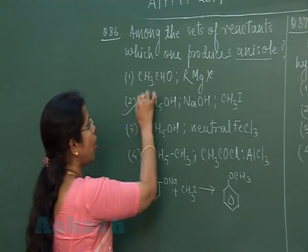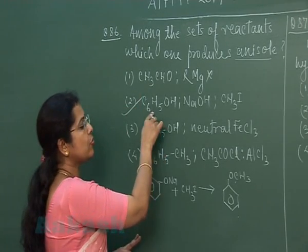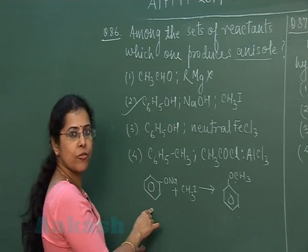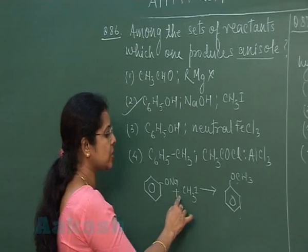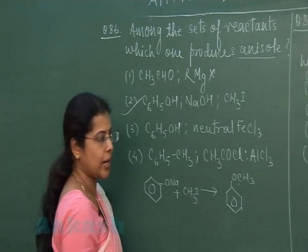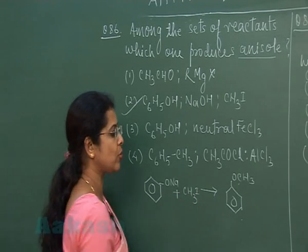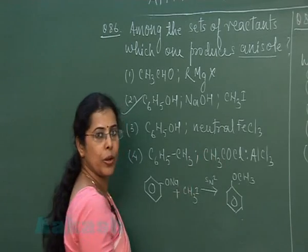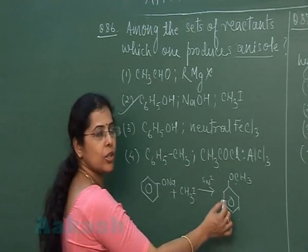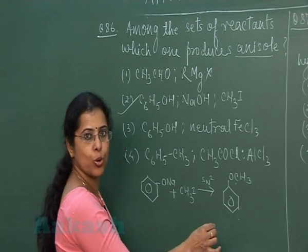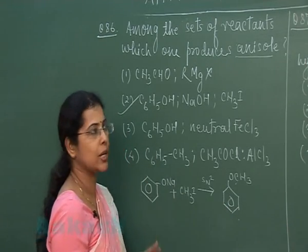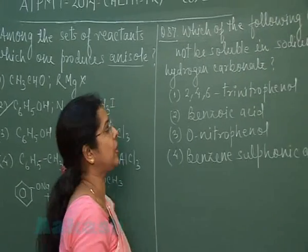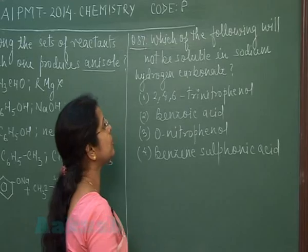The correct option is the second option. First, we treat phenol with NaOH — it is converted into sodium phenoxide. When this is treated with methyl iodide, nucleophilic substitution takes place and the reaction proceeds via SN2 mechanism, resulting in the formation of anisole. So the correct answer is the second option.